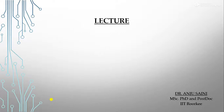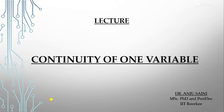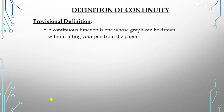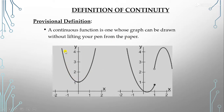Welcome to this lecture on continuity of one-variable functions, which is the last topic of your syllabus. In the simplest form, a continuous function is one whose graph can be drawn without lifting your pen from the paper. You can see this graph here — to draw it, our pen is not lifted, so this is a continuous function.